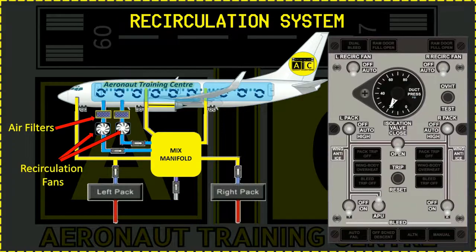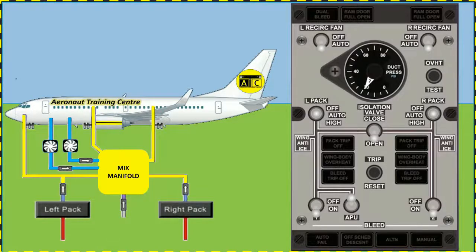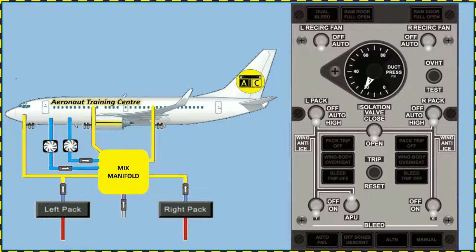In AUTO mode, recirculation operation has two modes. On the ground, the recirculation fan operates constantly, and if both air conditioning packs are on high flow, the left recirculation fan operates too. During flight, the left and right recirculation fans operate while both air conditioning packs are operative. Air from both fans passes through a recirculation fan check valve that prevents any leakage or loss of conditioned air back into the mixed manifold from the recirculation system.